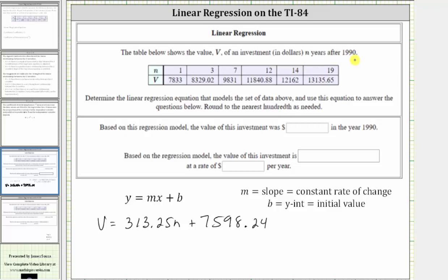But we also know because the equation is in slope-intercept form, b, the constant term, is the y-intercept, but it's also the initial value. And therefore, the starting value in 1990 was $7,598.24.